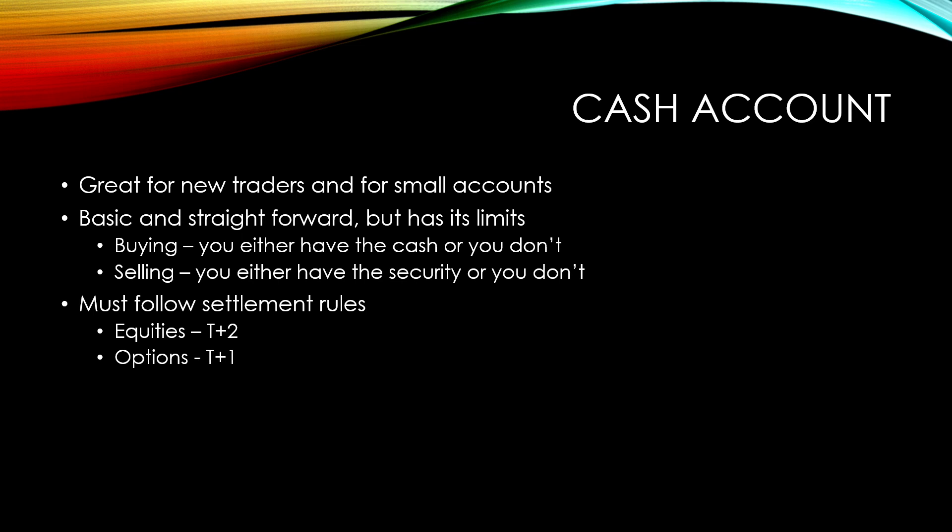When you're selling, you either have the security — shares, options, whatever — or you don't. It's black and white: you either have it or you don't. If you have five thousand dollars in your cash account and you want to buy a hundred shares of Apple, that's going to cost you fifteen thousand dollars. You only have five, so you can't do it — plain and simple.